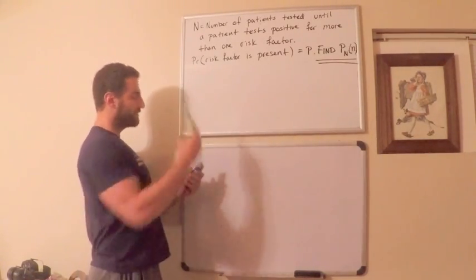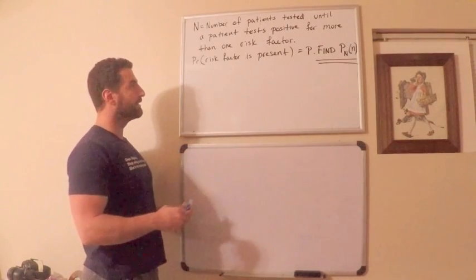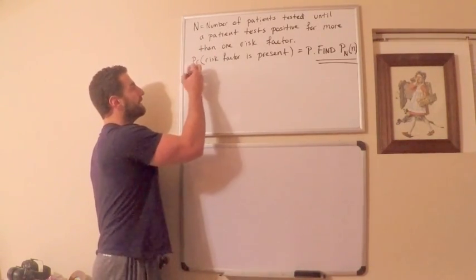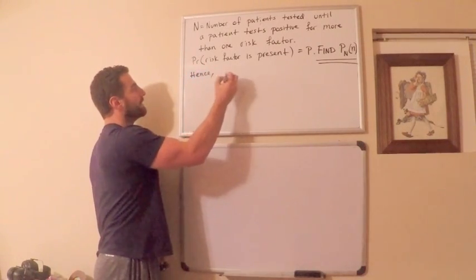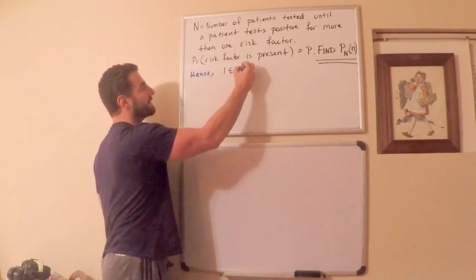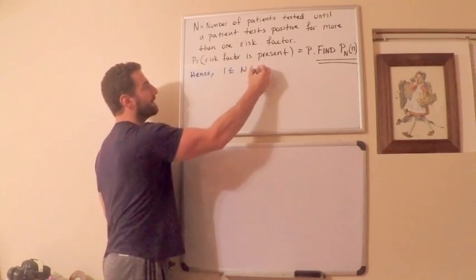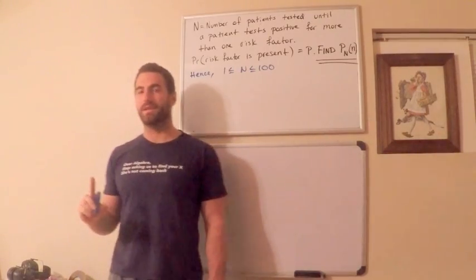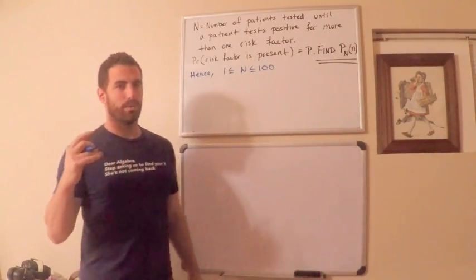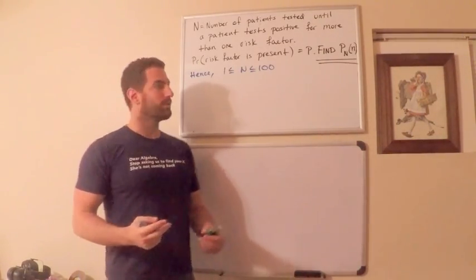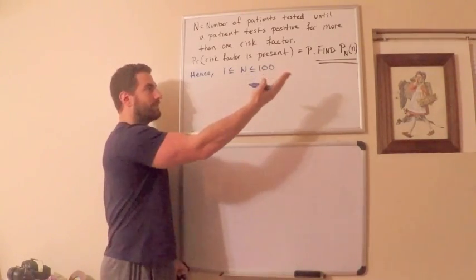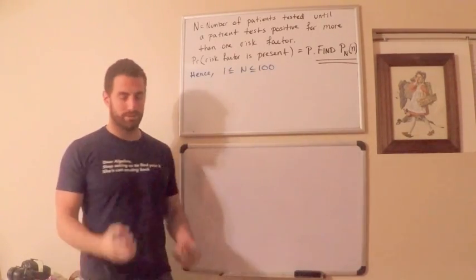What's going on with N? What values could N take? N could be such that 1 is less than or equal to N is less than or equal to 100. In the question, it stated that we're testing 100 patients, so there's no way that the number of patients could be greater than 100, and they have to be at least 1 of course.